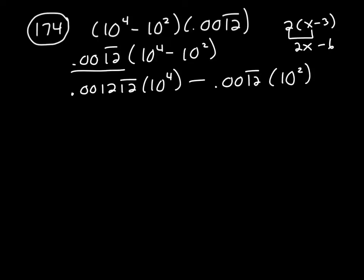And when you multiply something by 10 to the 4th, all it does is move the decimal 4 places to the right. So 1, 2, 3, 4, that turns into 12.12 minus.